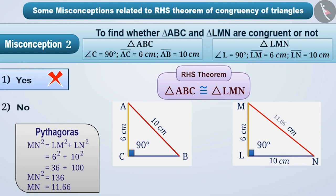On finding this, we see that the measurement of one arm in both the triangles is the same, but the measurement of the hypotenuse is not equal.